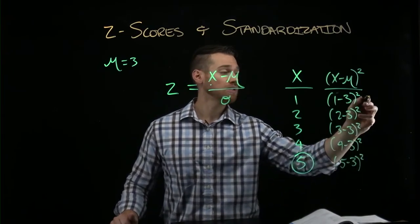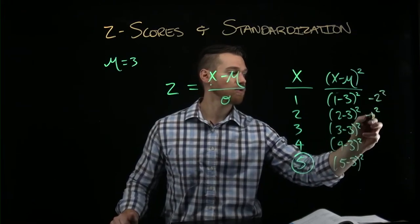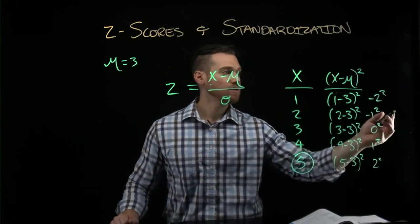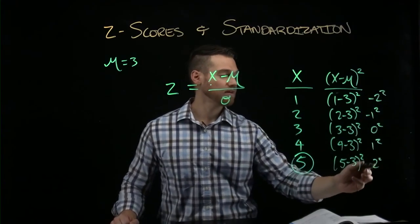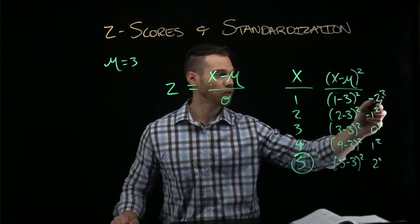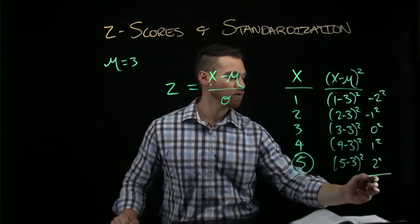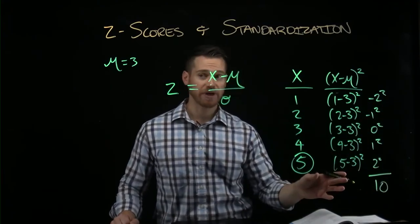Which is negative 2 squared, negative 1 squared, 0 squared, 1 squared, and 2 squared. So these, then, are going to be 4, 1, 0, 1, and 4, which is 10. So our sum of squares is 10.